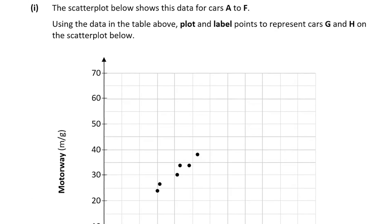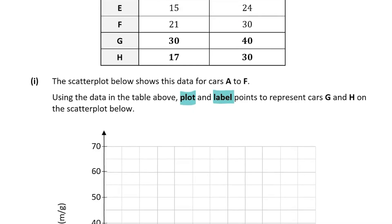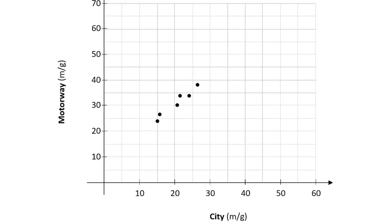Question A part one tells us that the scatter plot below shows the data for cars A to F and asks us to plot and label points to represent cars G and H on the scatter plot. Let's look at G first. G's fuel consumption in the city is 30 and on the motorway is 40. So on the city axis it's 30, and we go straight up vertically until we get to 40 on the motorway, and that is point G.